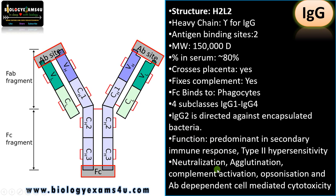IgG works by neutralization, agglutination causing clumping of infected cells and ultimately destruction. It activates complement as already discussed, and also mediates opsonization — enhancing the capacity of phagocytes for phagocytosis to ensure destruction of the infected cell. IgG also mediates antibody-dependent cell-mediated cytotoxicity, where IgG bound to an infected cell directly activates cytotoxic T cells that destroy the infected cell. These are the major functions of IgG. Thank you for your support — you are with biologyexams4u.com.